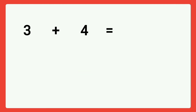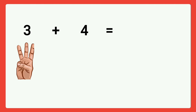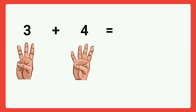Next, three plus four. Take three fingers in your right hand plus four fingers in your left hand. Then count all together: one, two, three, four, five, six, seven. Total seven fingers. So three plus four is equal to seven.